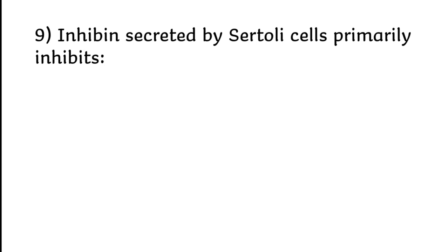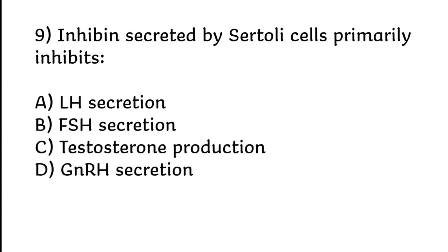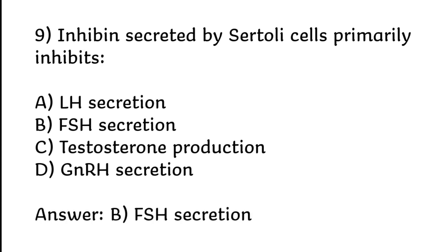Inhibin secreted by cells primarily inhibits: A) LH secretion, B) FSH secretion, C) Testosterone production, D) GnRH secretion. Correct answer is option B: FSH secretion.